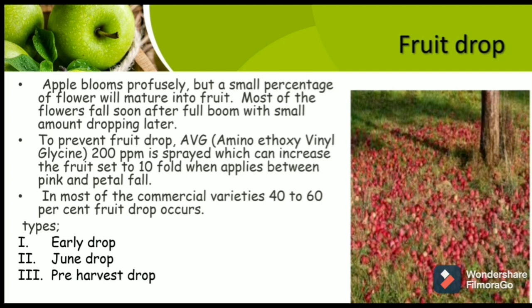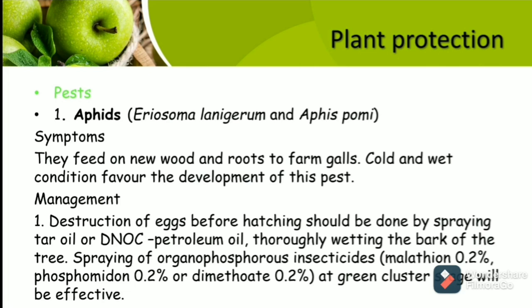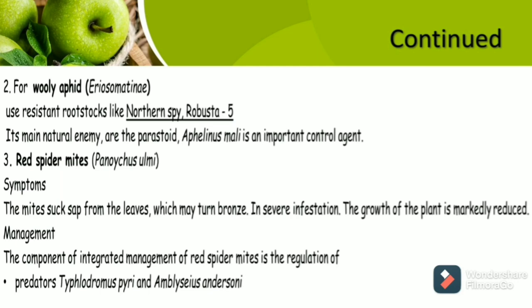Regarding plant protection against pests: The first pest is aphids, with causative organisms being Eriosoma lanigerum and Aphis pomi. Symptoms include feeding on new wood and roots to form galls. Cold and wet conditions favor development of this pest. Management includes destruction of eggs before hatching by spraying tar oil or DNOC petroleum oil, and spraying of organophosphate insecticides such as malathion 0.2% or phosphamidon 0.2% at the green cluster stage. For woolly aphids, caused by Eriosoma lanigerum, use resistant rootstock like Malling Merton 793. Its main natural enemy is the parasitoid Aphelinus mali, which is an important control agent.